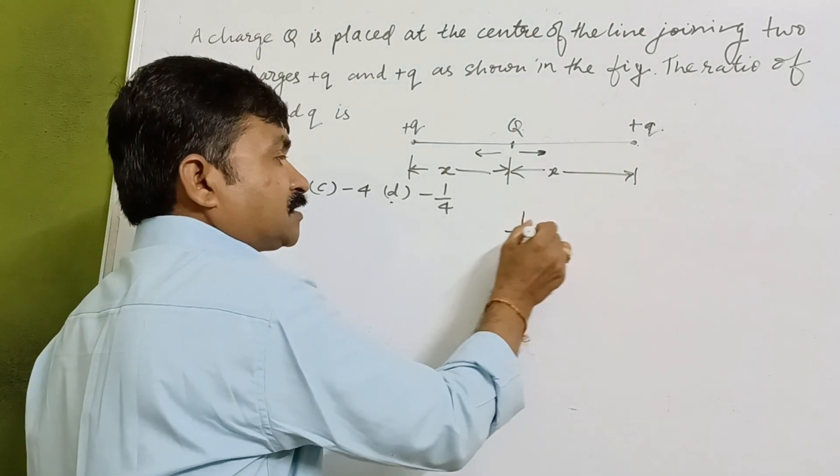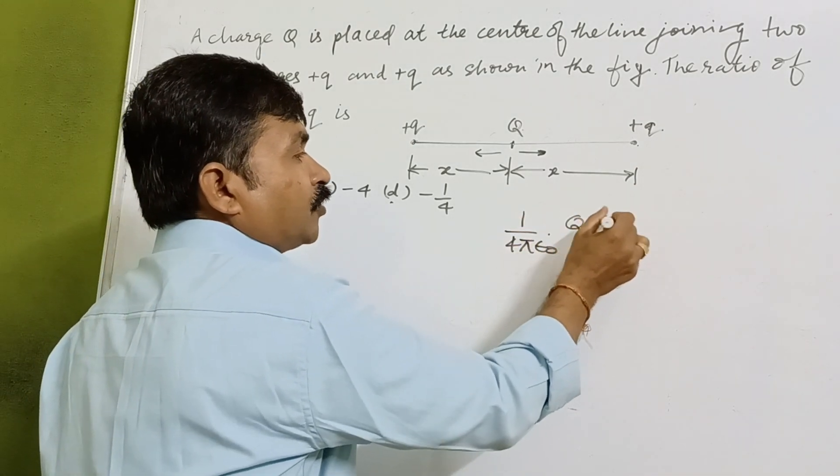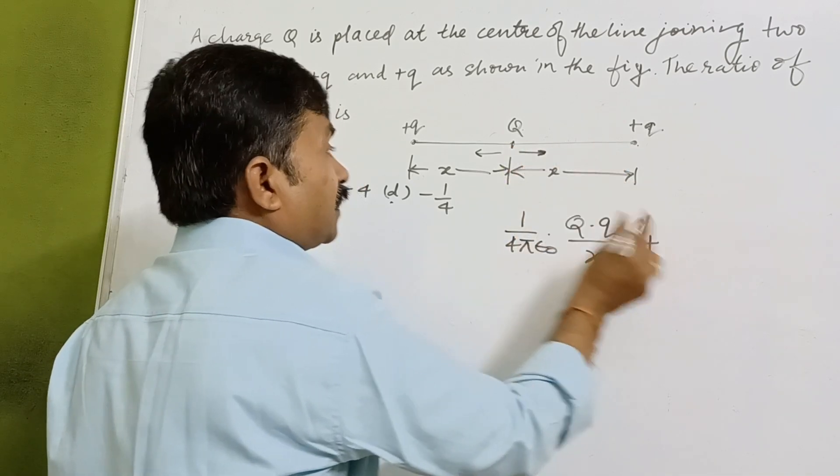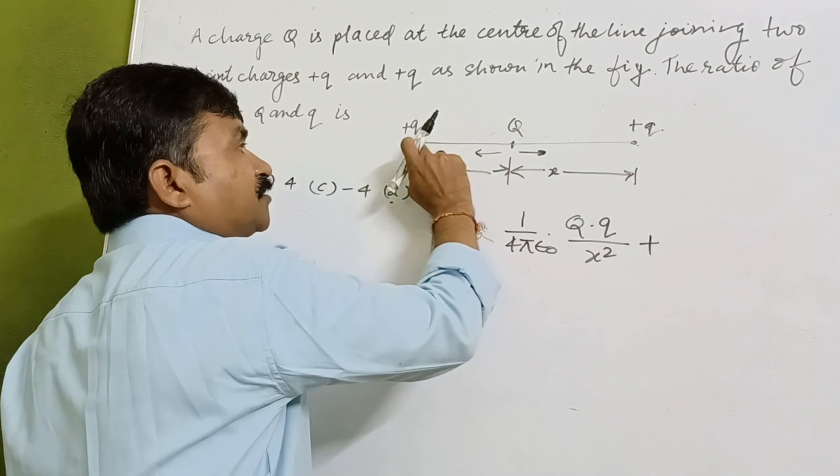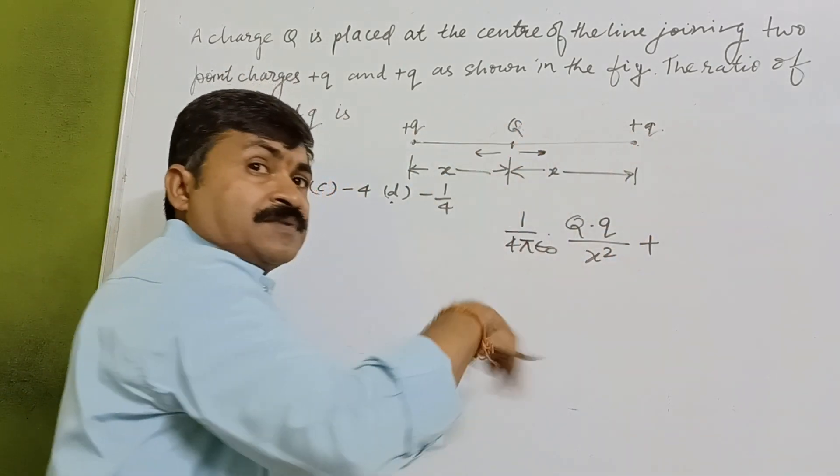We have 1/(4πε₀) into Q into Q upon this distance that is x² plus another force which is acting because of this Q on this. We have assumed this and it must be balanced.